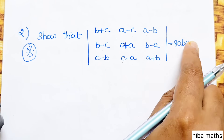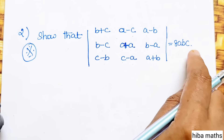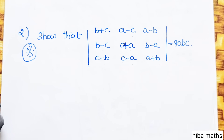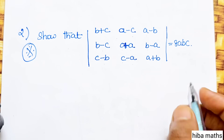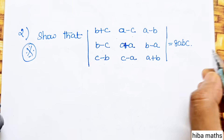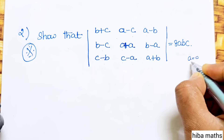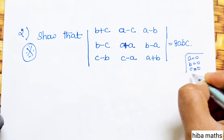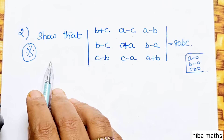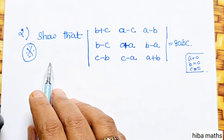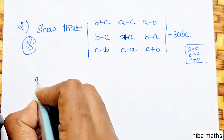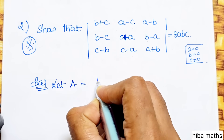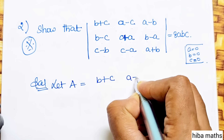We will prove it. We will tell you that A, B, C are the unknowns. What do we need to do? First, put A equal to 0, then B equal to 0, then C equal to 0. This gives us a hint. In the question we will look at the solution. Let A be the determinant with entries B plus C, A minus C, A minus B, and so on.